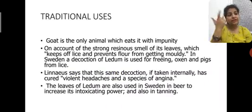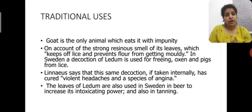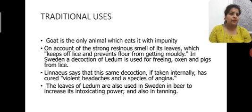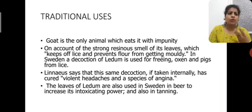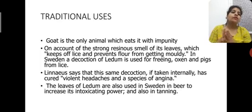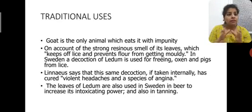About traditional uses — tea was used, as already explained. Because it has an intoxicating effect, some people in Sweden and other parts of the world used it to increase intoxicating power. The leaves of this plant were also used for domestic animals like ox and pigs to make them free from lice, due to its strong aroma.